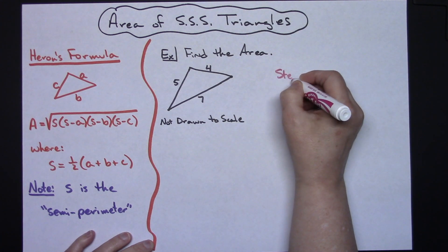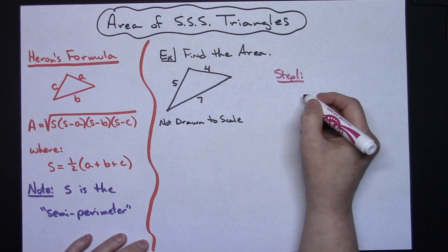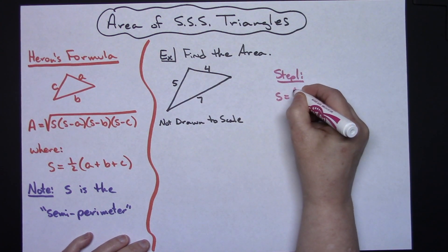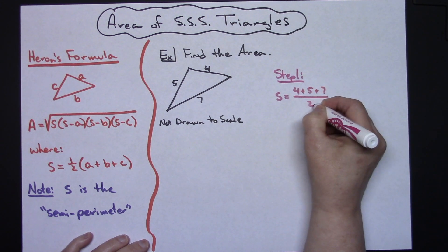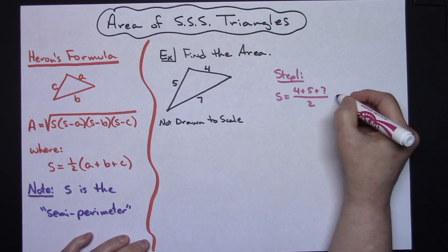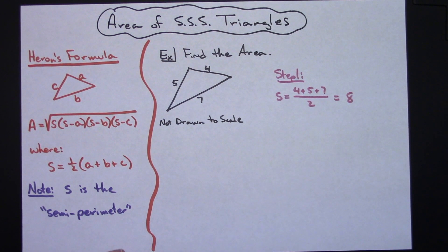First thing you need to do is calculate this semi-perimeter. So we might do step one, step two here. Step one: I'm going to add up all the sides and divide by two, so I'm going to do 4 plus 5 plus 7 and then divide by 2, and that's going to give me an 8.